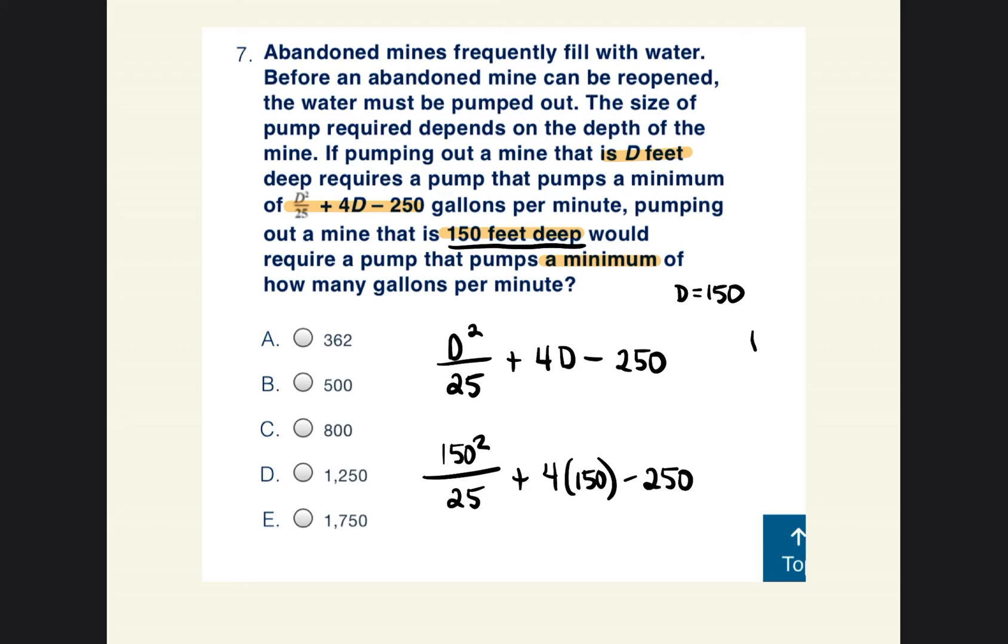Okay, so now we're going to go ahead and we're going to just write the order of operations because we're going to have to use them. So parentheses, technically there's nothing inside the parentheses that we can do. So we're not going to do anything with the parentheses. The second one is exponents. So there's an exponent here. So 150 squared would be 150 times 150. And that's equal to 22,500. And I'm going to go ahead and rewrite the equation.